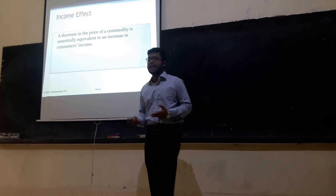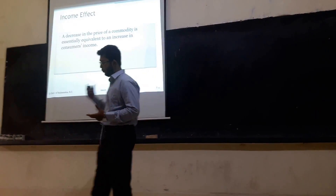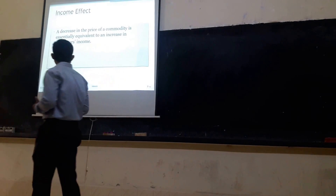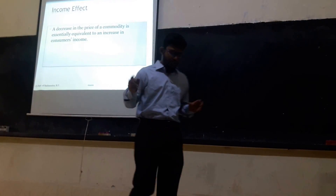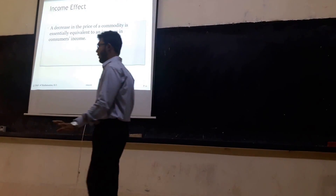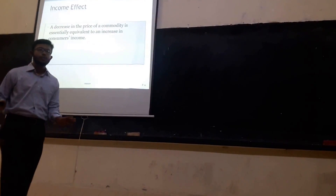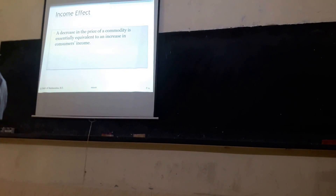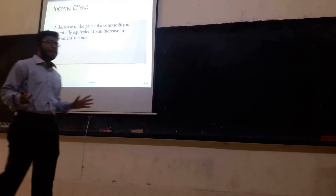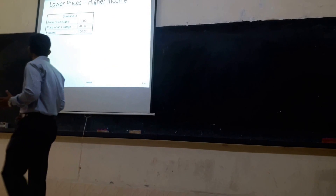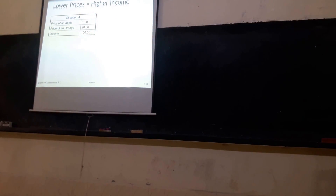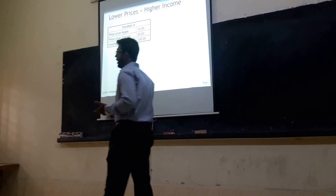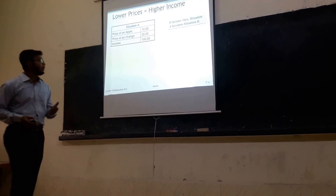For the income effect: a decrease in the price of a commodity is essentially equivalent to an increase in the income of consumers. Suppose every day I earn 100 units of money and I want to buy apples and oranges for my family. If my income is too low, I cannot afford much. Now suppose my income rises to 200 units — I can afford more apples and oranges. That is situation B.